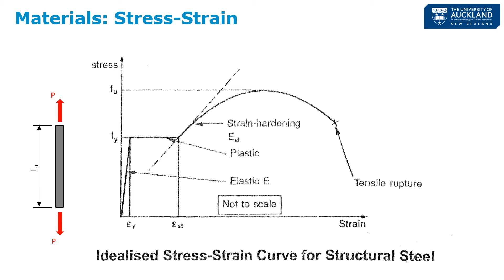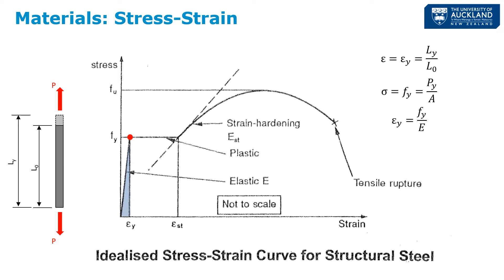Imagine the gray block as a piece of steel being pulled in tension. As we continue to pull, we reach the yield point, where we are at our yield strain — which is the elongation divided by the original length — and we are at our yield stress, Fy. It is this Fy that we use in most of our structural steel design, and it will vary between grades as well as thickness, as we'll see shortly.